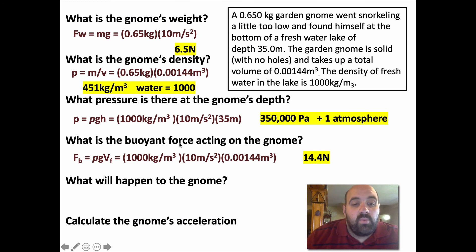What will happen to the gnome? Well, I'm hoping you're thinking in terms of physics. The gnome has a weight of 6.5 going down. The gnome has a buoyant force of 14.4 going up. The upward force is significantly greater than the downward force. What is the gnome going to do? Naturally the gnome is going to accelerate upwards. This object's less dense than water. Imagine holding a basketball underwater and releasing it. It's going to shoot up to the top.